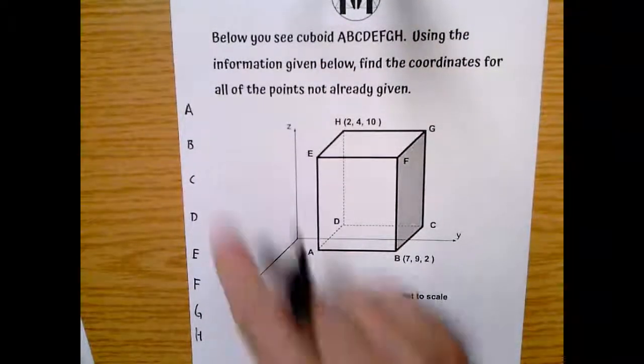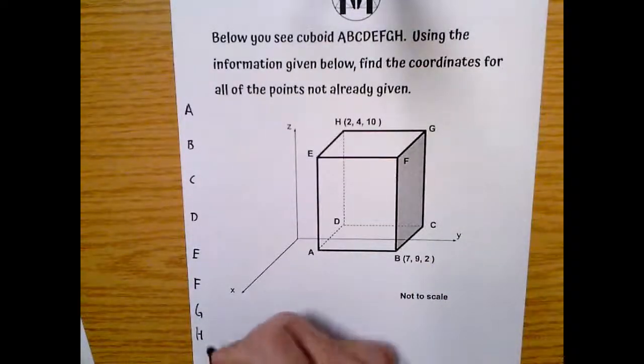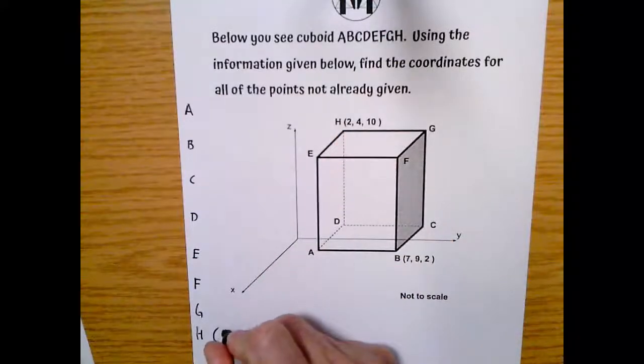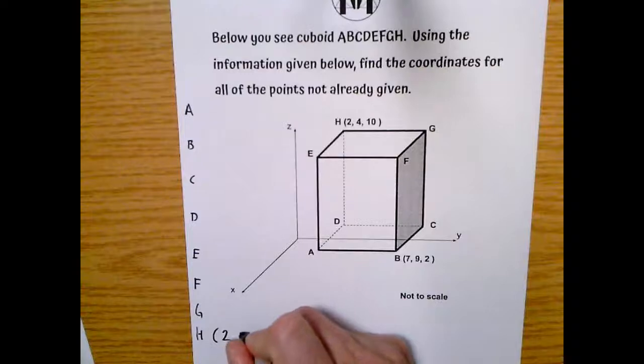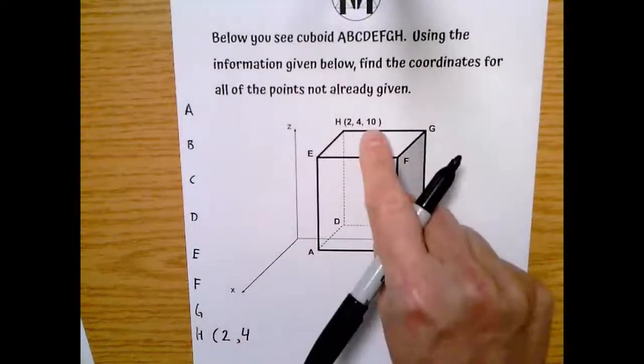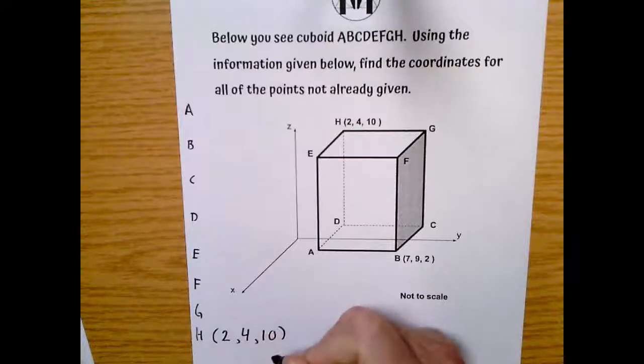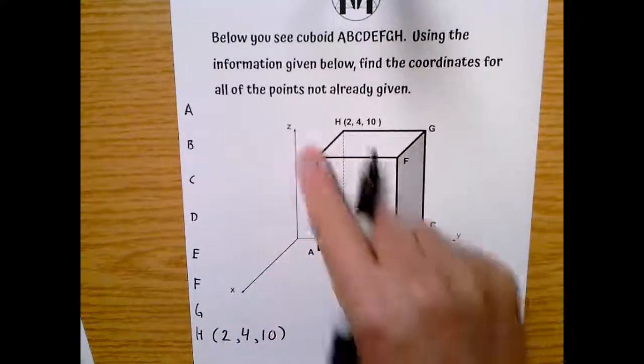So first, lucky us, we have 1, 2, 3, 4, 5, 6, 7, 8 points to find. They've already given us 2, so we know H is 2, that's the X coordinate. We know 4 is the Y coordinate, and 10 is the Z coordinate. And this is the X axis, the Y axis, and the Z axis.